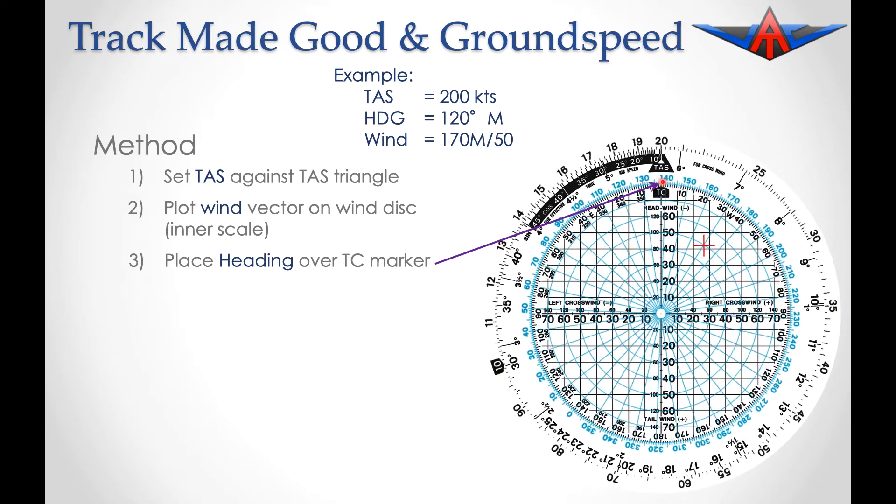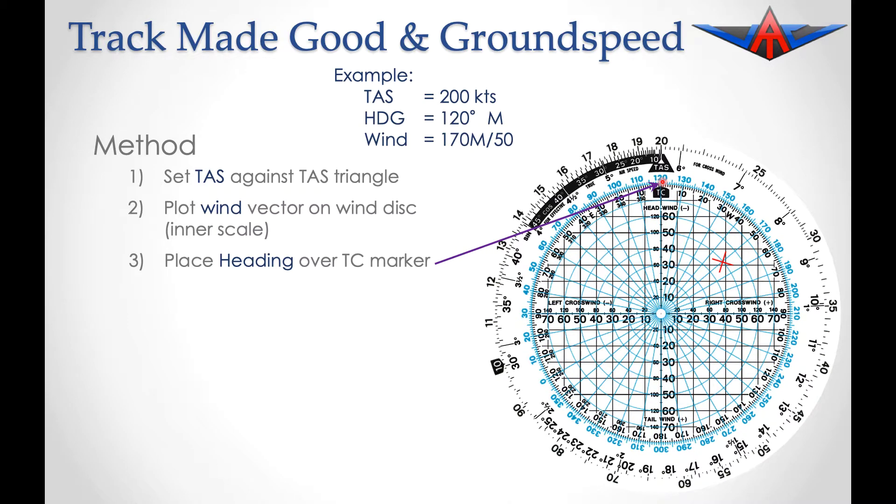You'll notice that the wind dot has moved around to the right hand side. We now read down from where that X is onto our crosswind scale and read the crosswind component. In this case, we have a crosswind of 38 from the right hand side.